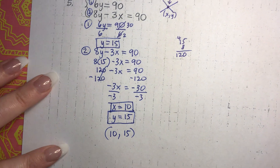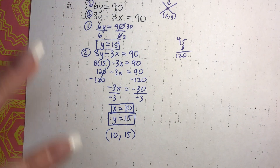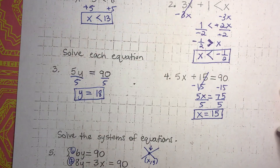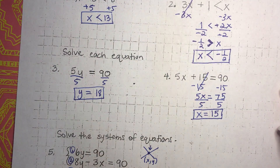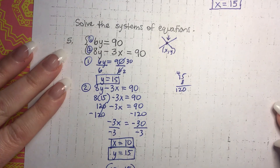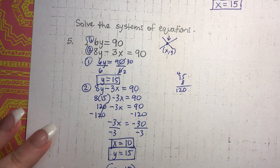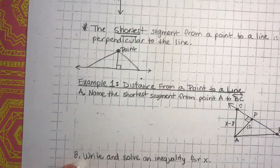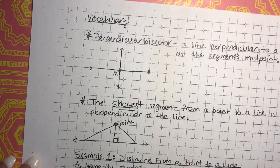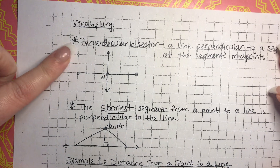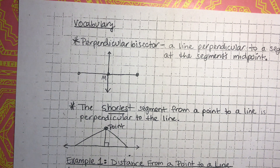Okay, that was our warm-up. So that pretty much lets you know that we're going to be using inequalities, solving equations, and also solving systems of equations within this lesson at some point. Alright, so let's go ahead and get started with the vocabulary. Our first vocabulary term is a perpendicular bisector.